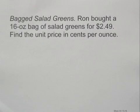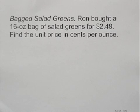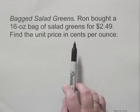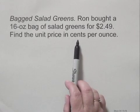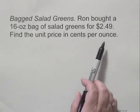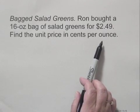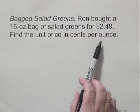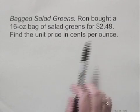Ron bought a 16-ounce bag of salad greens for $2.49. Find the unit price in cents per ounce. We're asked for cents per ounce, so we put the number of cents in the numerator and the number of ounces in the denominator to find the unit price.